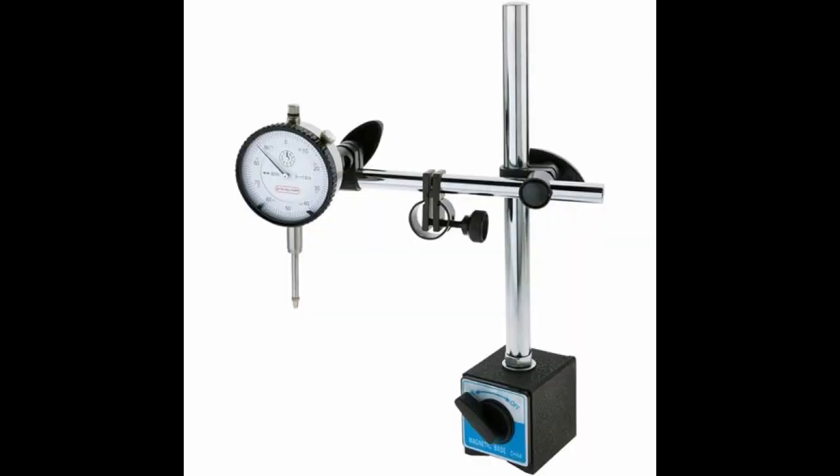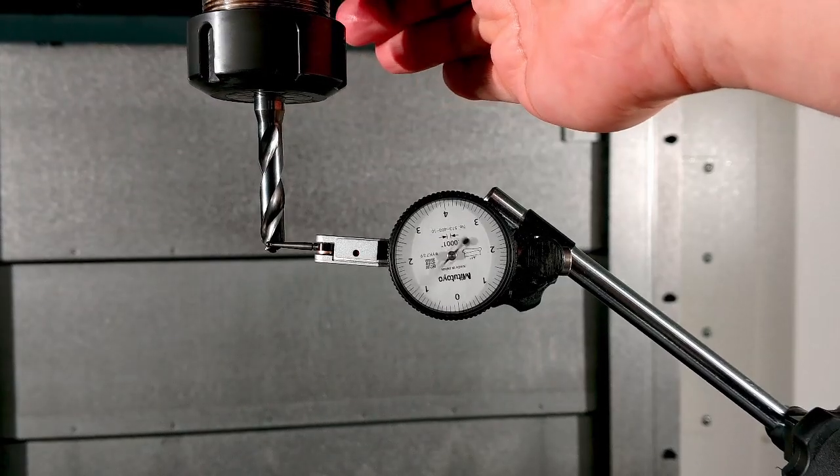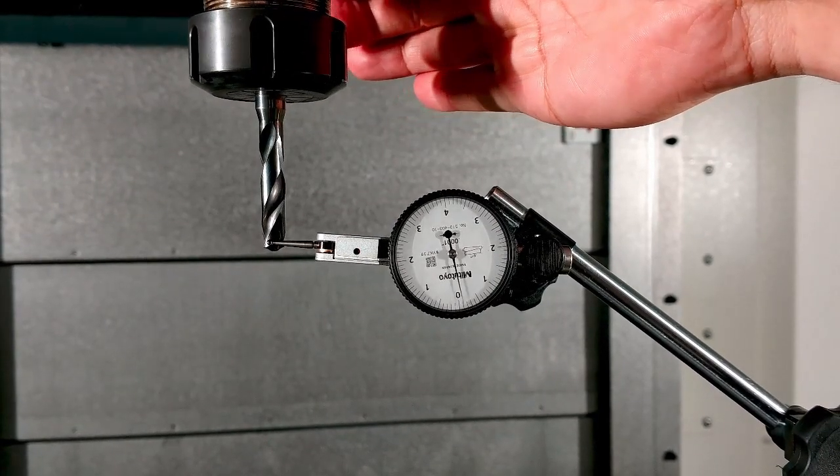A dial indicator is the easiest way to check for runout. If the indicator shows substantially different values on each of the drill lands, it may imply excessive runout is present.